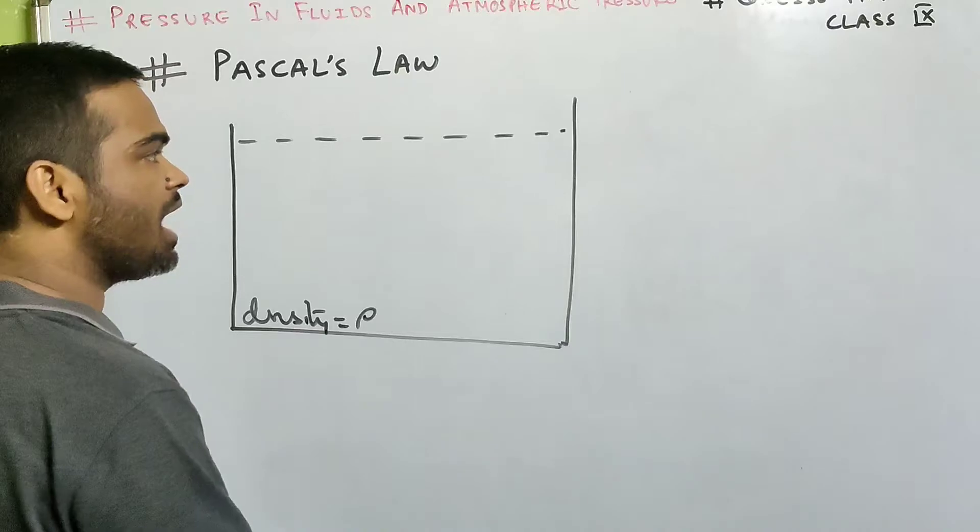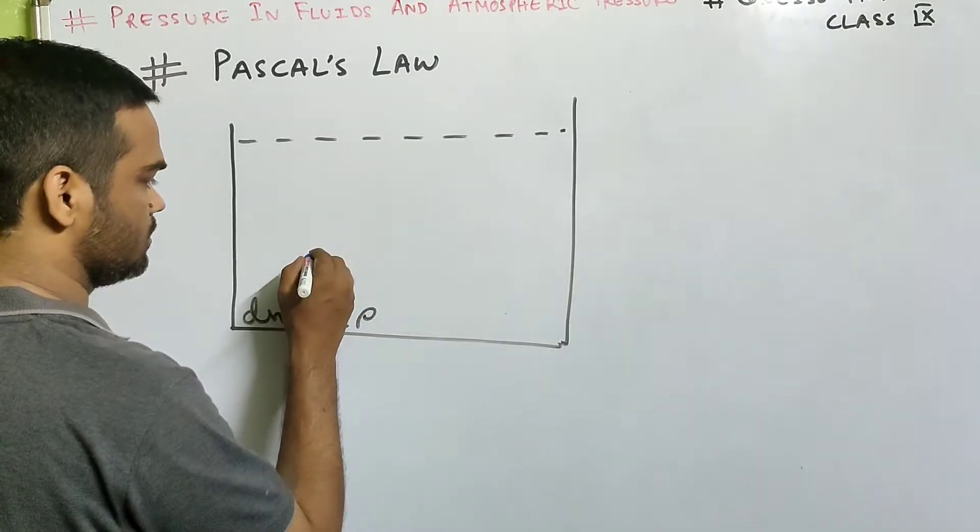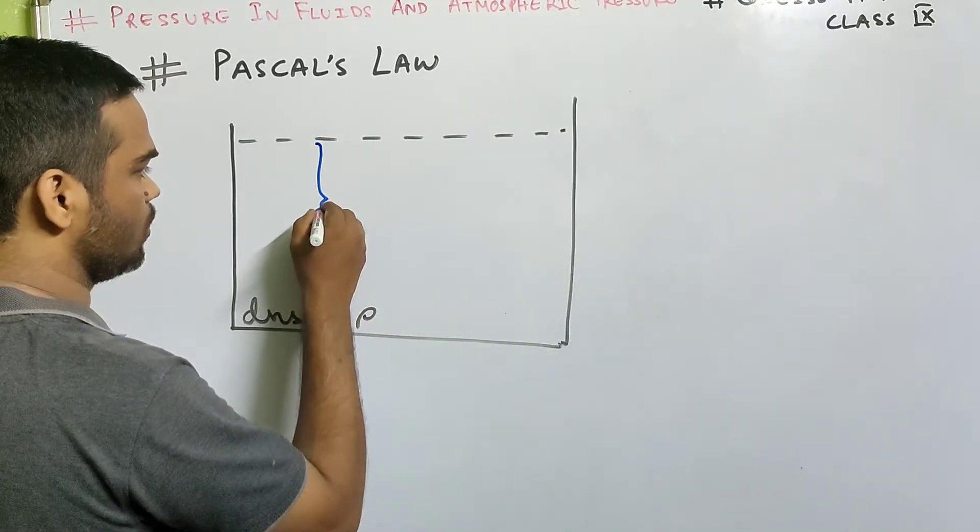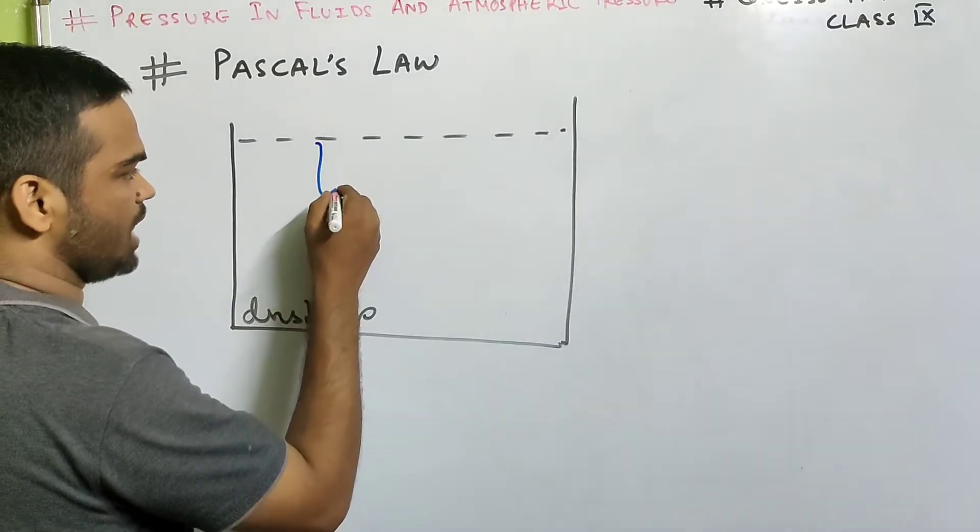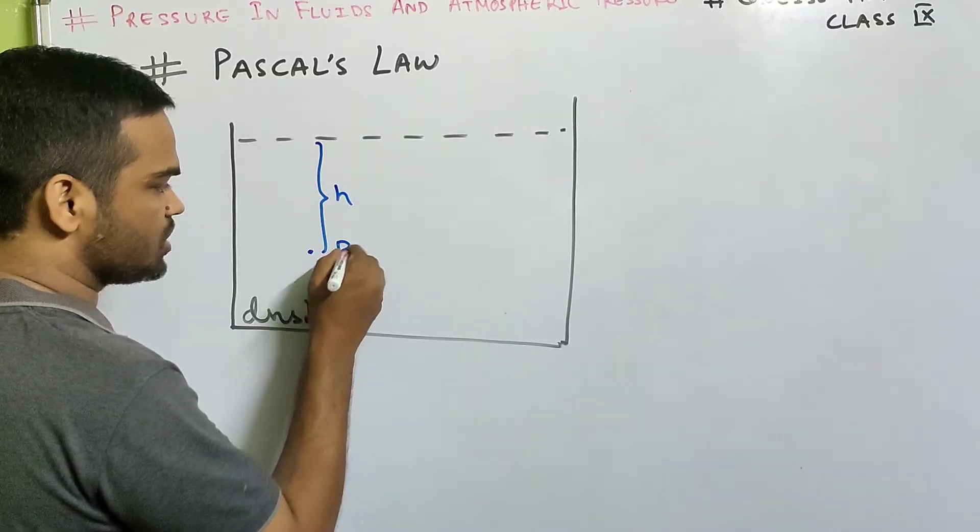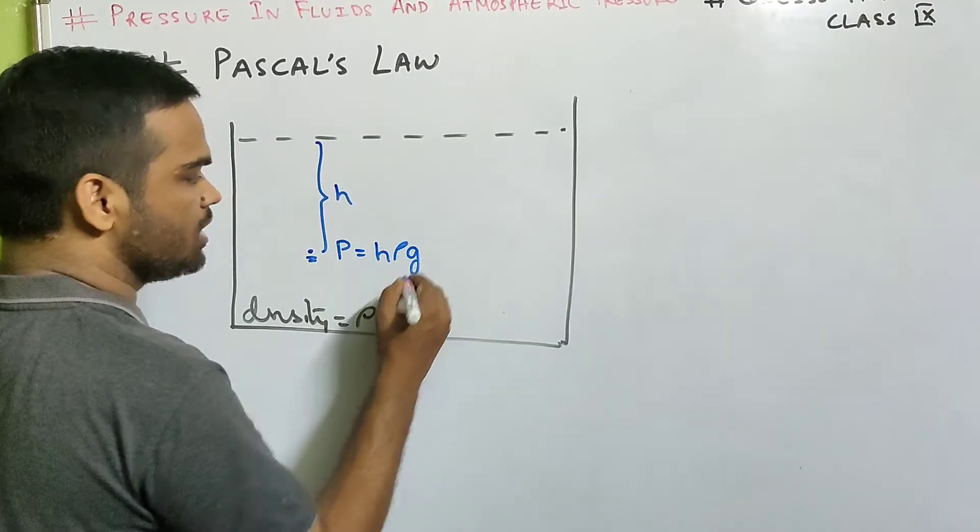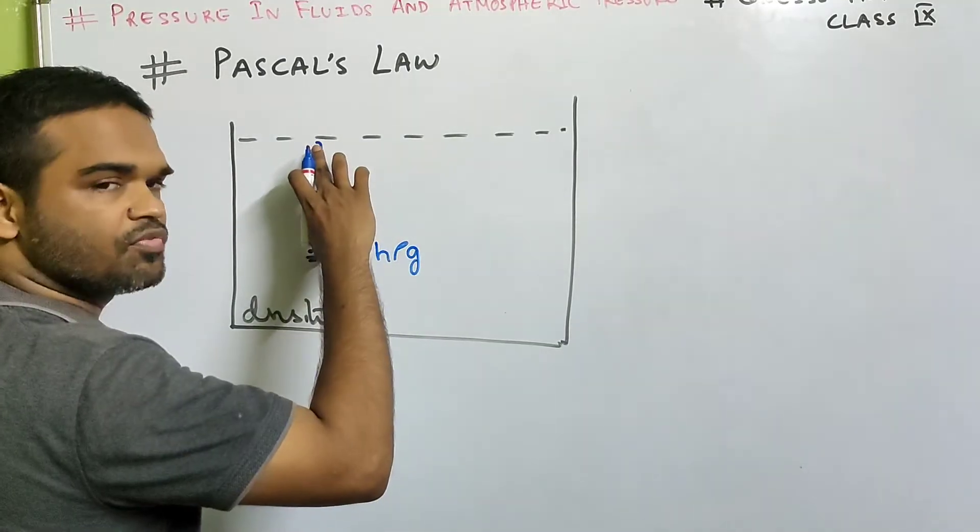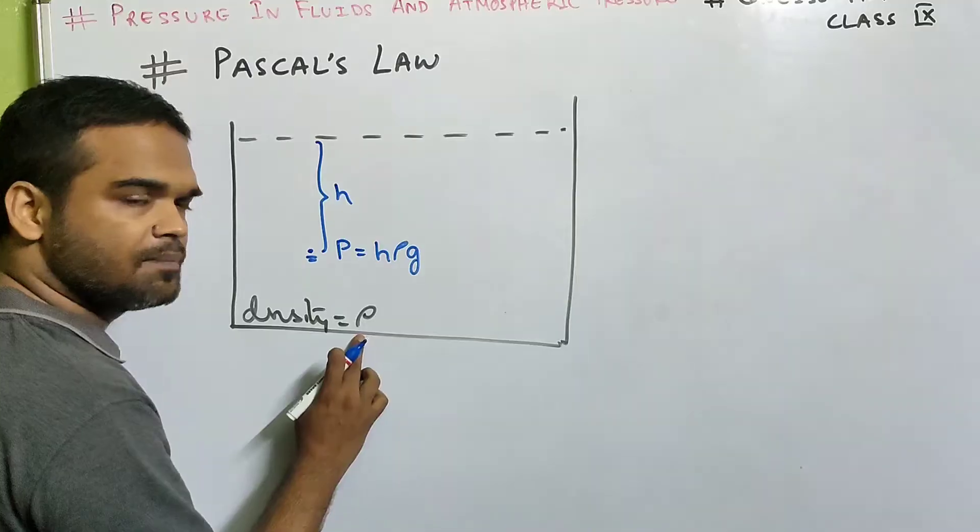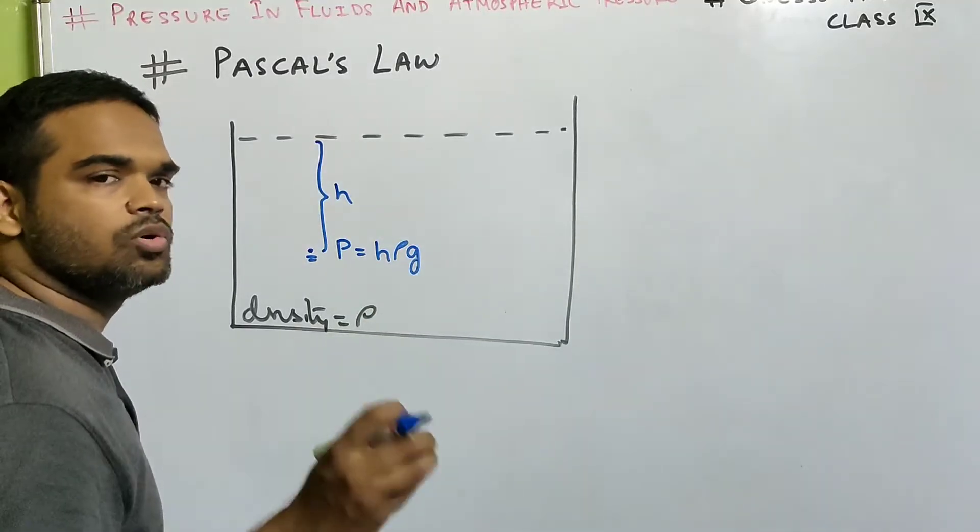Then pressure at a point below the free surface, suppose at a depth h, pressure at this point will be h rho g, where h is the depth from the free surface, rho is the density and g is acceleration due to gravity.